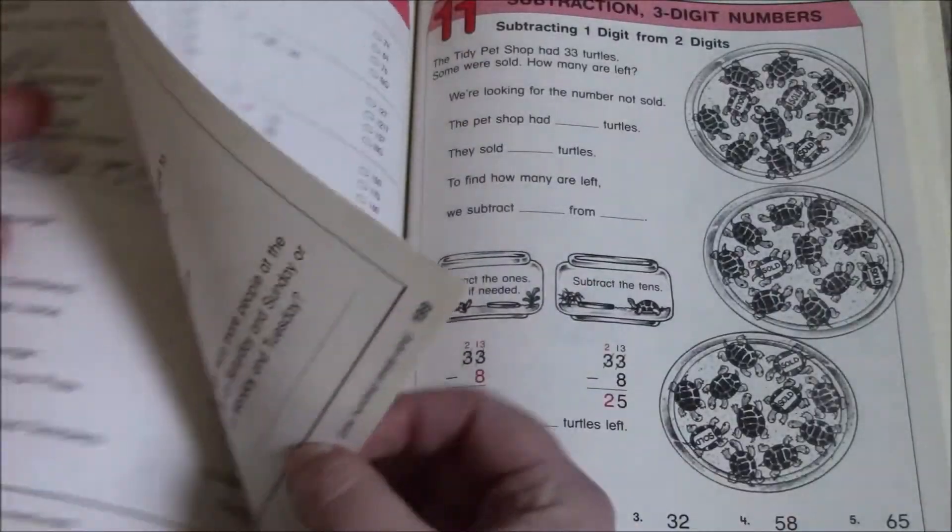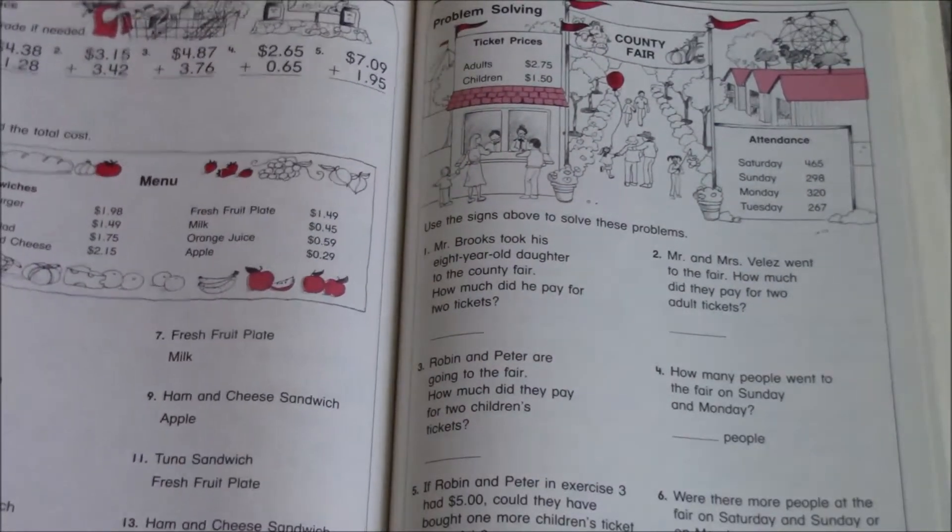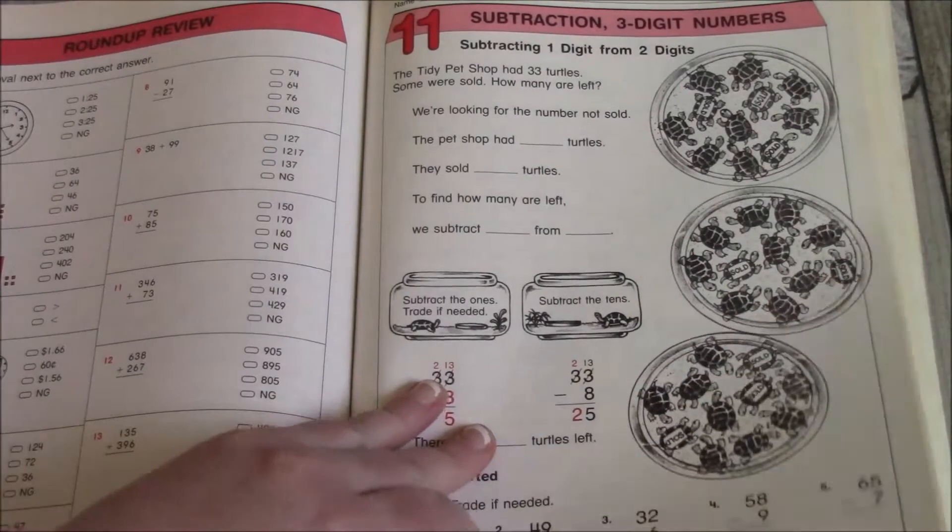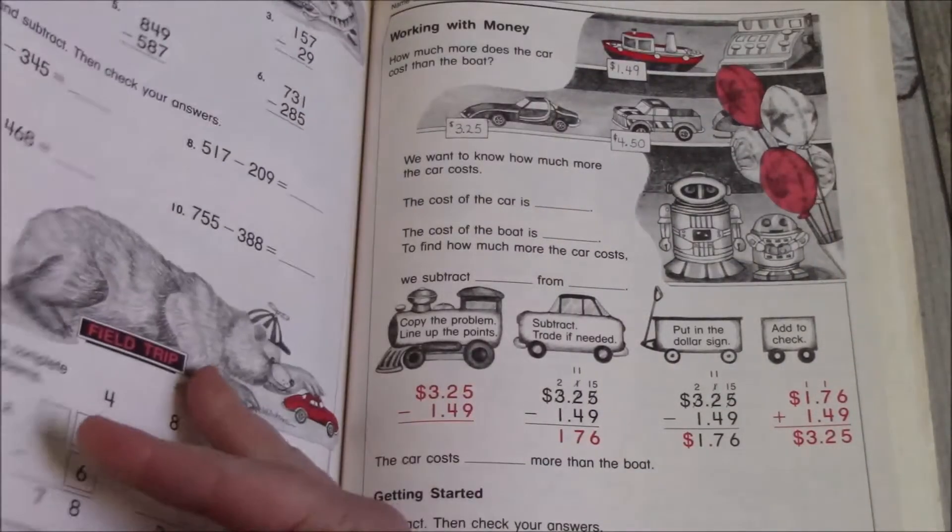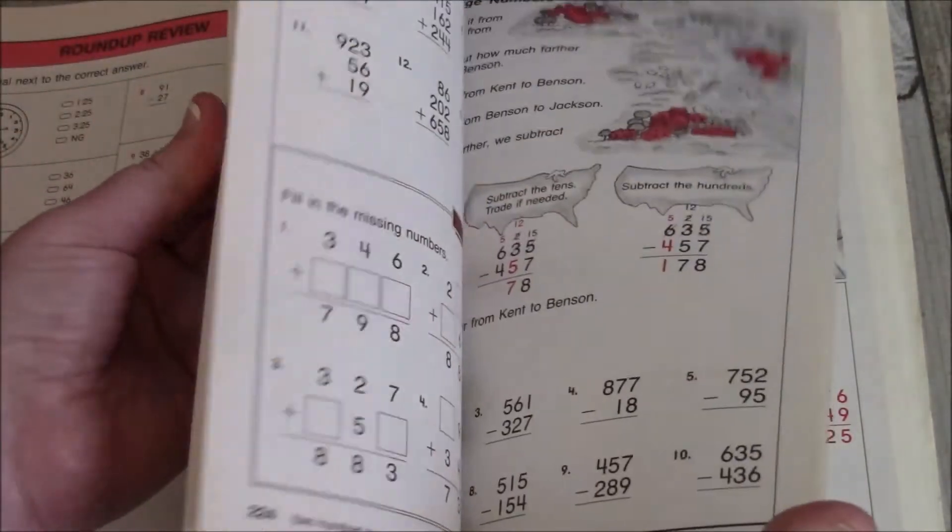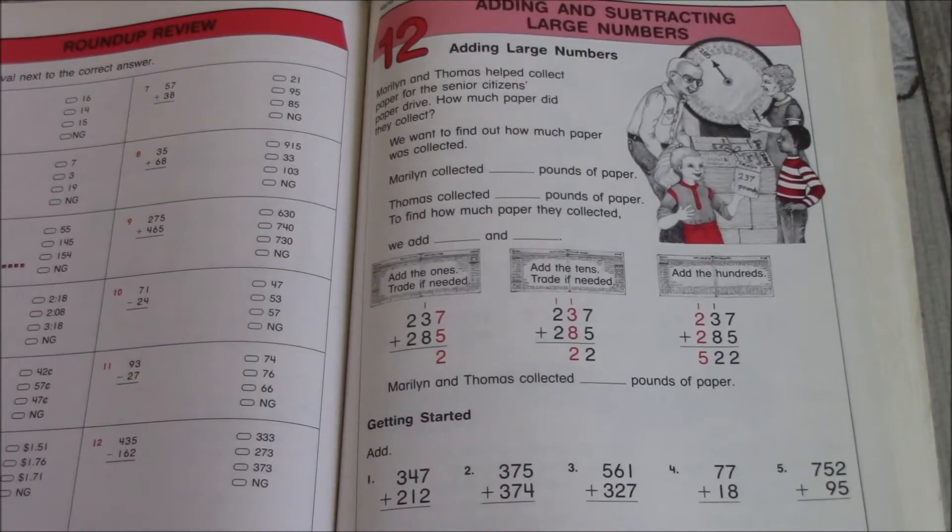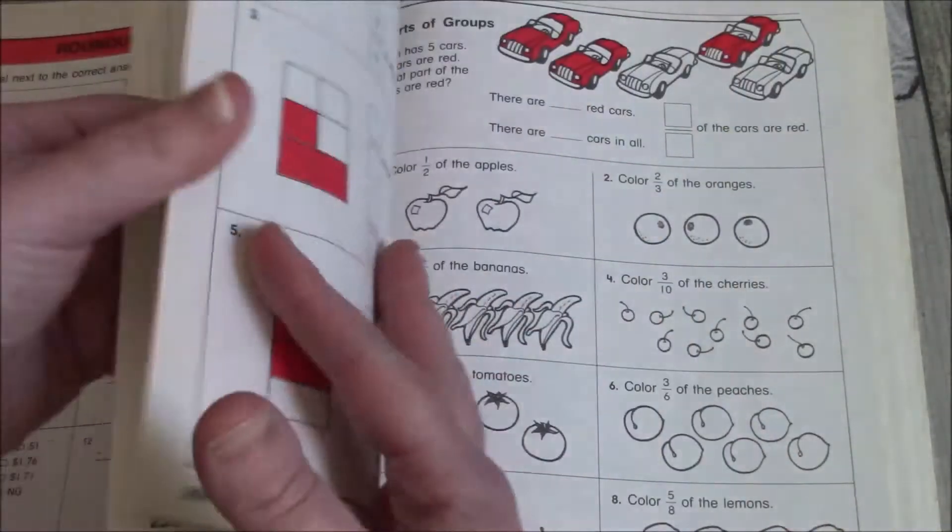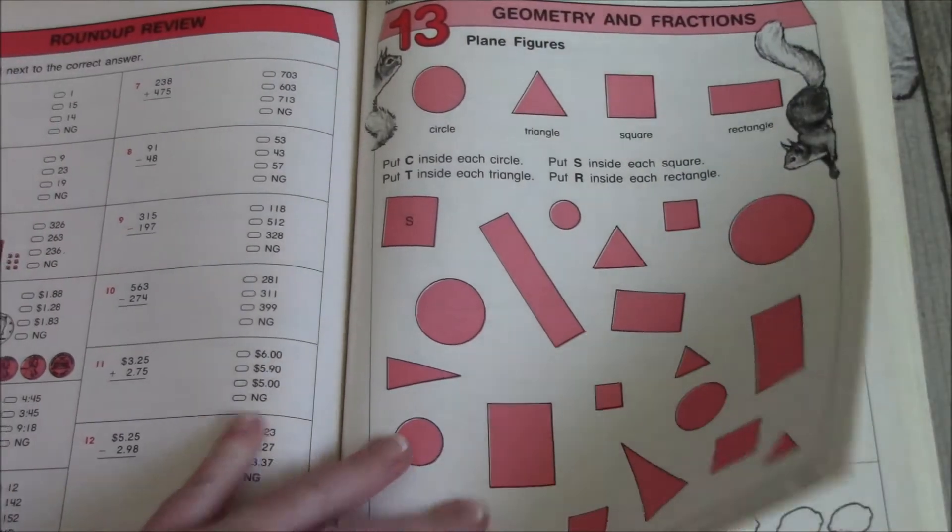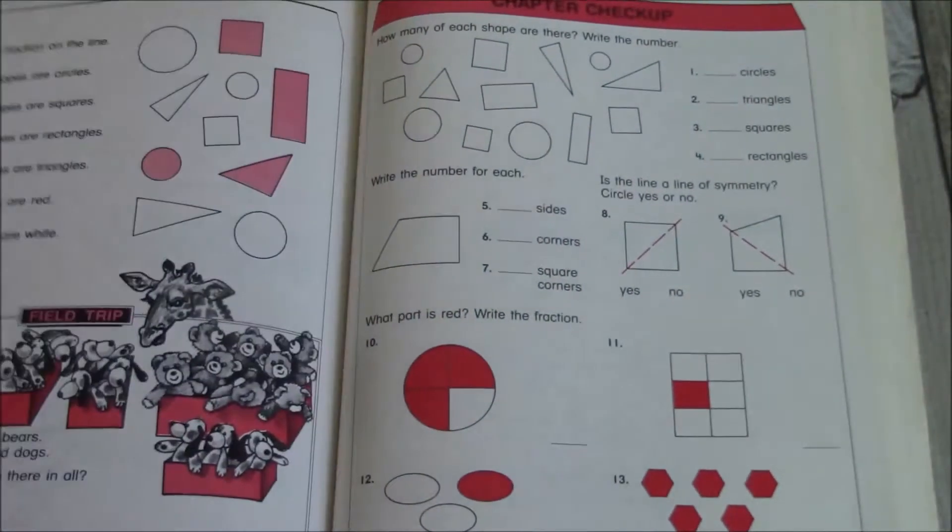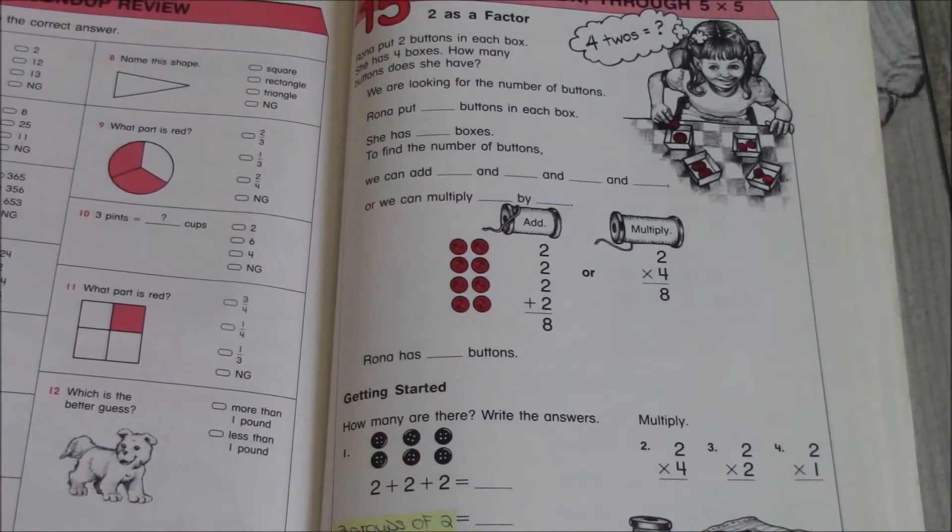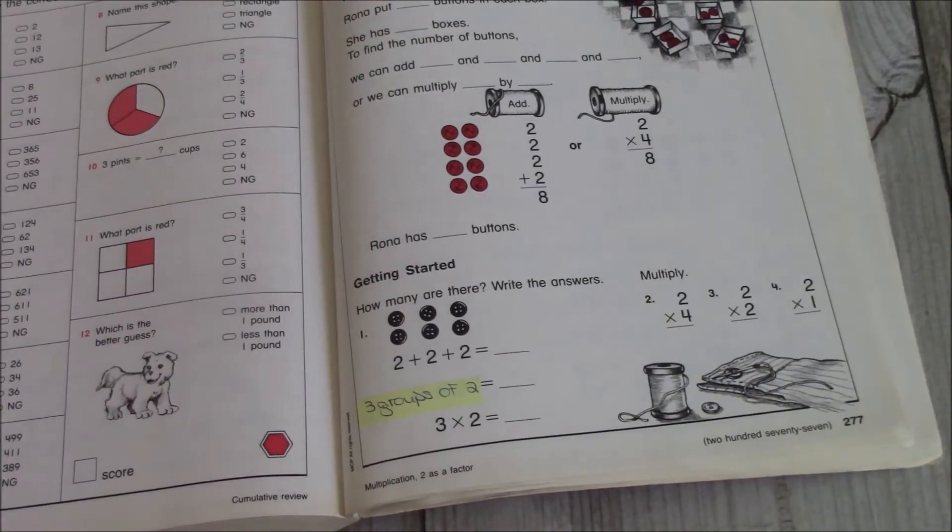There are some word problems, which these are always helpful for certain students of mine. Number 11 will be subtraction with three-digit numbers. Twelve is going to be adding and subtracting large numbers. Thirteen, we're going to be working on geometry and fractions. Fourteen, we'll be working on measurements. And fifteen, we'll be working on multiplication through five times five, and I can see where this is a used copy.